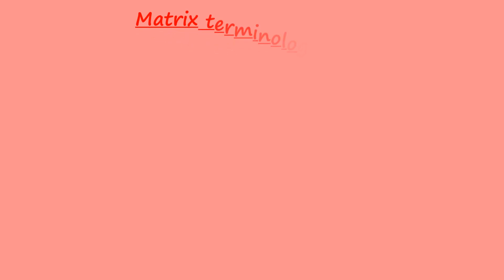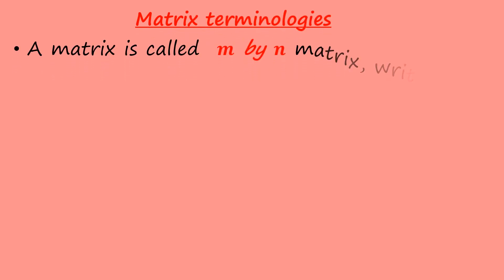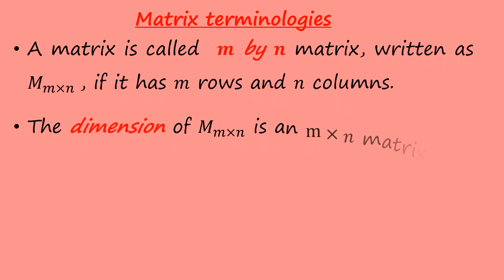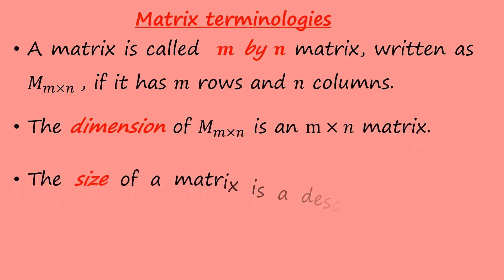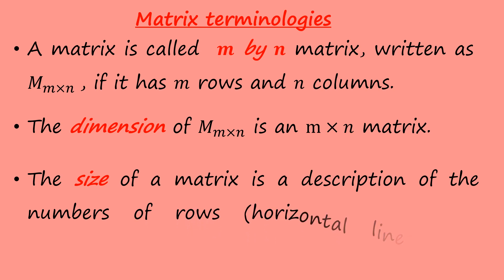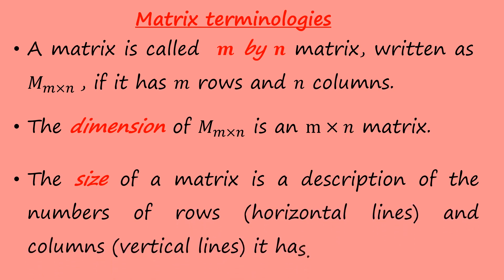We begin with matrix terminologies. A matrix is called an m by n matrix if it has m rows and n columns. The dimensions represent the m by n matrix. The size of a matrix is a description of the number of rows — the horizontal lines — and the columns — the vertical lines — it has.